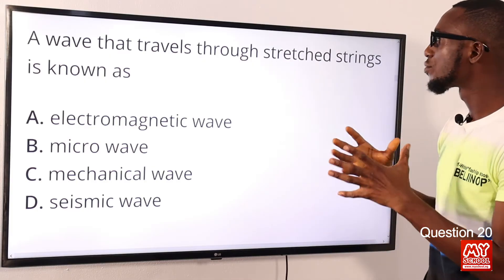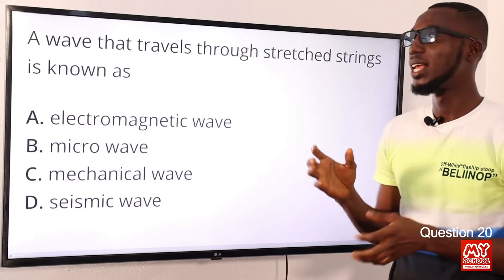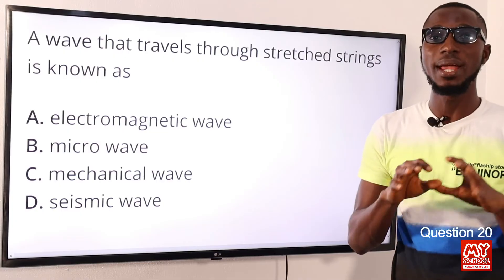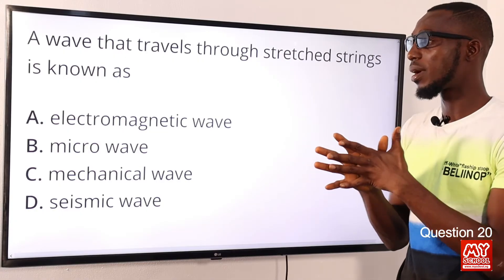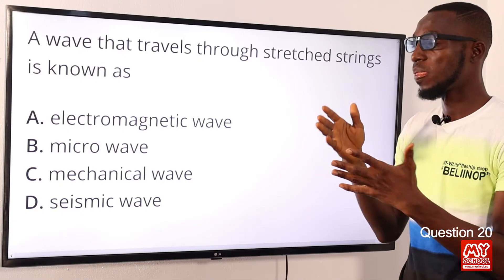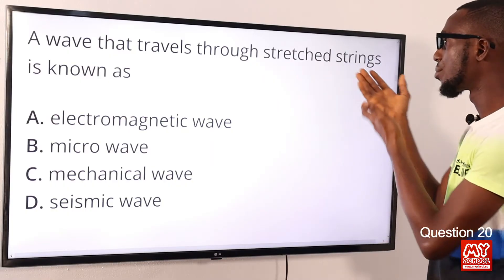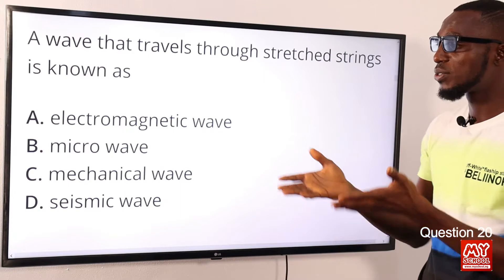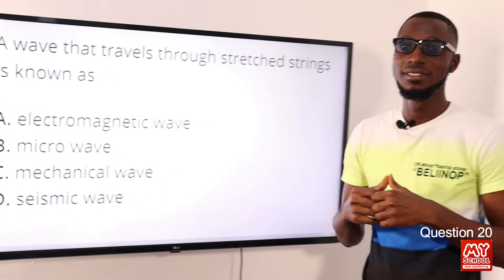Question 20: A wave that travels through stretched strings is known as what? This involves a material medium, so it is definitely a mechanical wave. Examples of mechanical waves include sand waves, water waves, and those that travel through strings or ropes. The correct option is option C for mechanical waves.